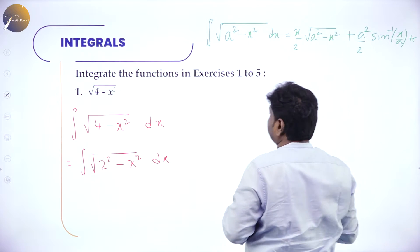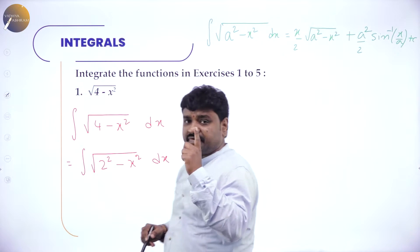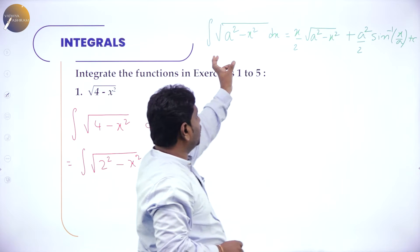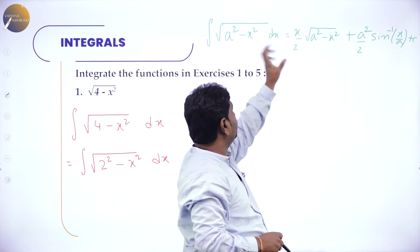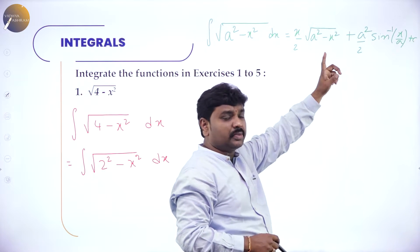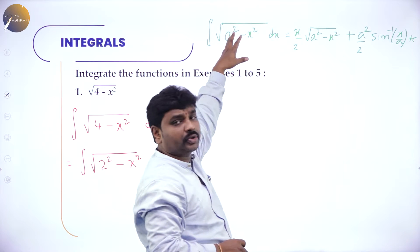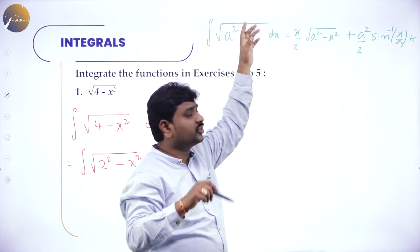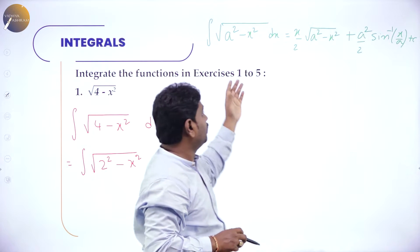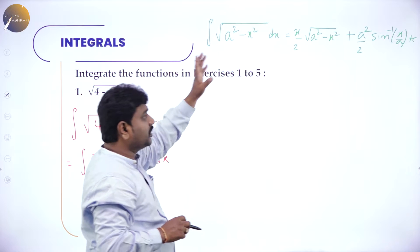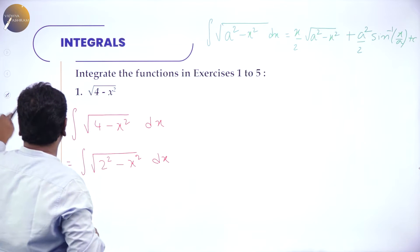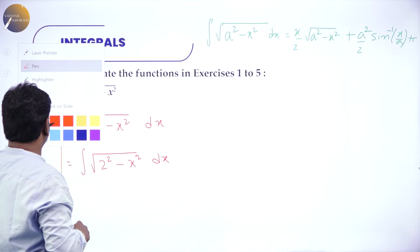Please memorize all three specific integrals. Whenever they appear in the numerator, the answer is x/2 times the numerator plus a²/2 times the integration of its reciprocal. You know 1/√(a² - x²) is sin⁻¹(x/a). This formula is important — if you don't know the formula you cannot solve. So now it is in standard form and we can use the formula.